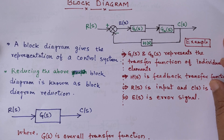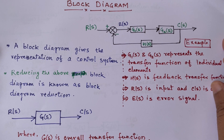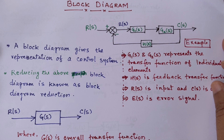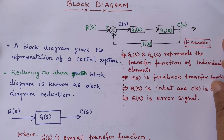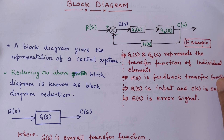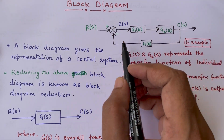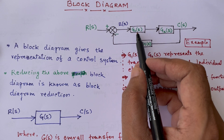Hello friends, welcome to my channel RF Design Basics. In this video I will be discussing the block diagram of a control system. I will also discuss the block diagram reduction technique and certain rules. Let us try to understand what a block diagram is. A block diagram is basically a representation of different transfer function blocks, their summing point, and takeoff point.